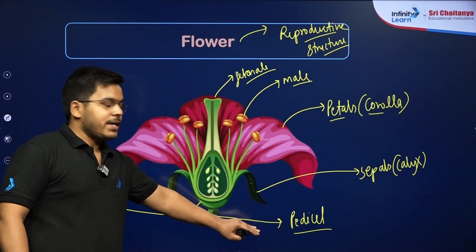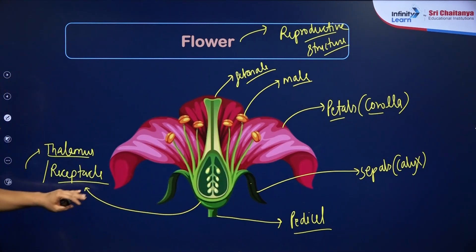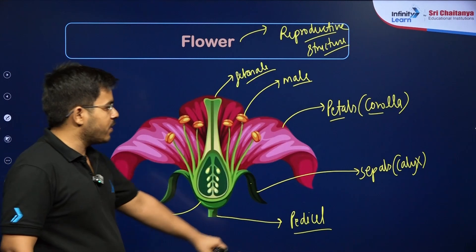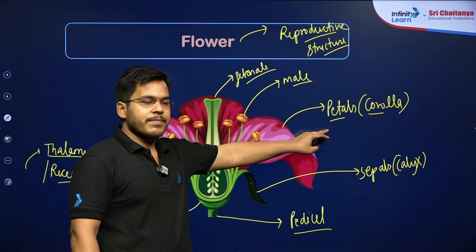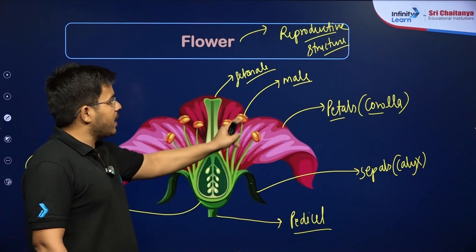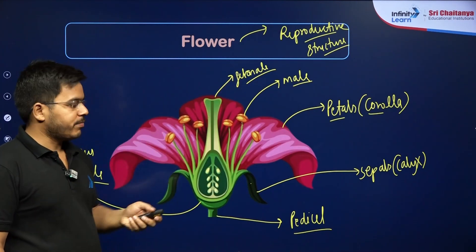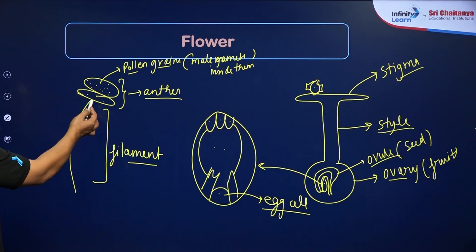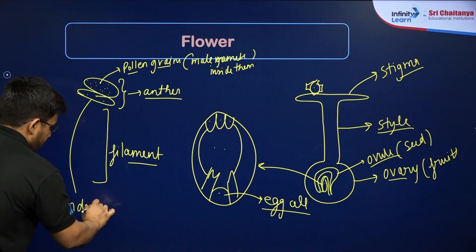Let's recap. We have the pedicel — the stalk attaching the flower to the plant. Then the thalamus or receptacle — the swollen base that holds all other parts. Next are the sepals — green leafy structures at the base — collectively called the calyx. Then the colored petals, collectively called the corolla. Finally, the male part called the androecium and the female part called the gynoecium.